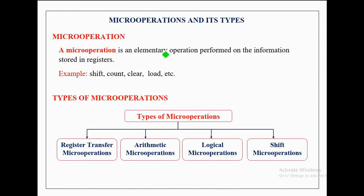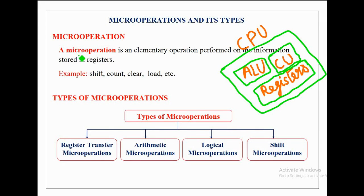A micro operation is an elementary operation performed on the information stored in registers. Registers are the important component of a processor. The three important components of a processor are arithmetic and logic unit, control unit, and registers. All the elementary operations performed on the information stored in registers are known as micro operations.